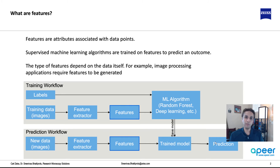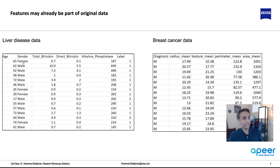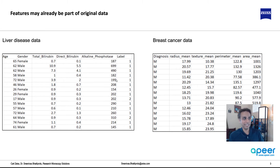That's typically the machine learning workflow, whether you're working with data or images. If you're working with data where attributes or features occur naturally — like liver disease data — the gender is a natural data point you get when testing a person. You also get their age, and from the blood test you get all these measurements. These features don't need to be generated artificially; they are naturally there: age, gender, bilirubin content, and so on.